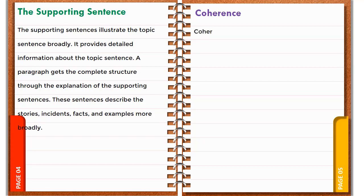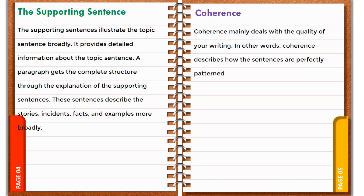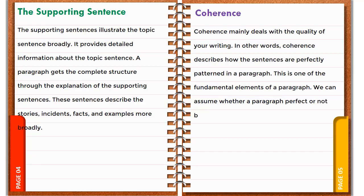Coherence mainly deals with the quality of your writing. In other words, coherence describes how the sentences are perfectly patterned in a paragraph. This is one of the fundamental elements of a paragraph. We can assume whether a paragraph is perfect or not by coherency.